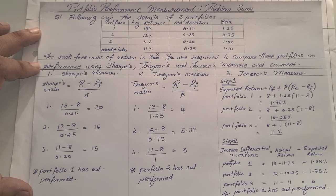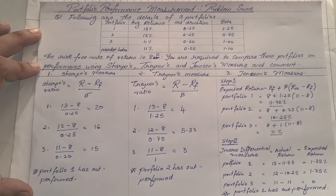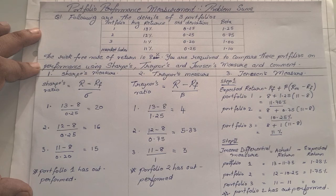So this is how you solve a sum when asked to find performance using Sharpe's measure, Treynor's measure, and Jensen's measure. Remember Jensen's has two parts — finding expected return using CAPM first, then the differential measure — while the others use a direct formula with straight substitution. I hope everyone has understood this very important exam sum under the chapter portfolio performance measurement. Stay tuned for more videos on important exam topics.